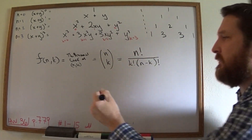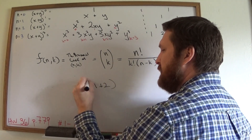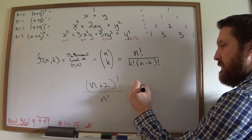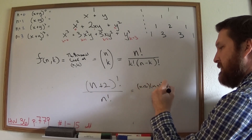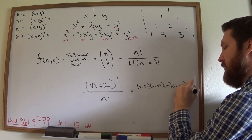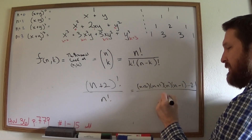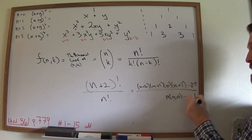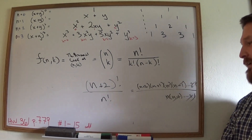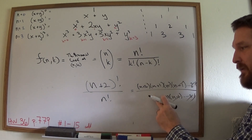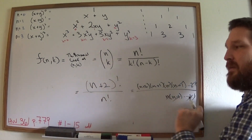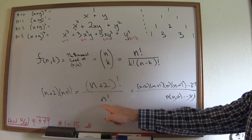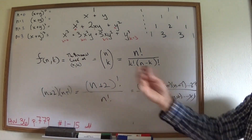When you compute something like (n+2)! / n!, you notice that n! divides everything in (n+2)! below n+2 and n+1, so you just get (n+2)(n+1). All the n's cancel with the n factorial in the denominator. This kind of cancellation will be useful in your homework.